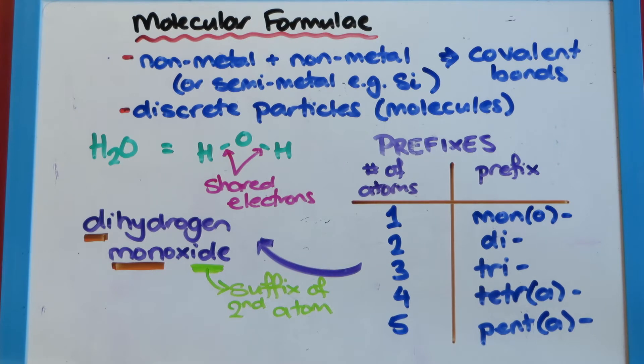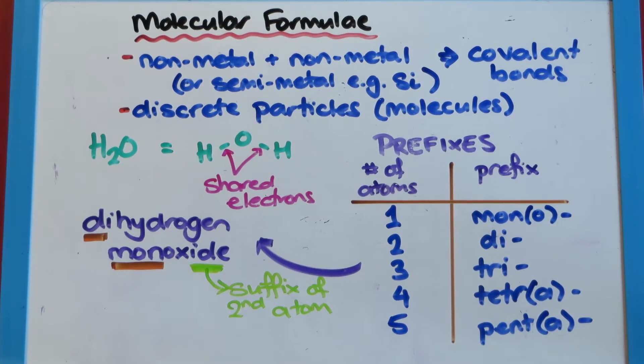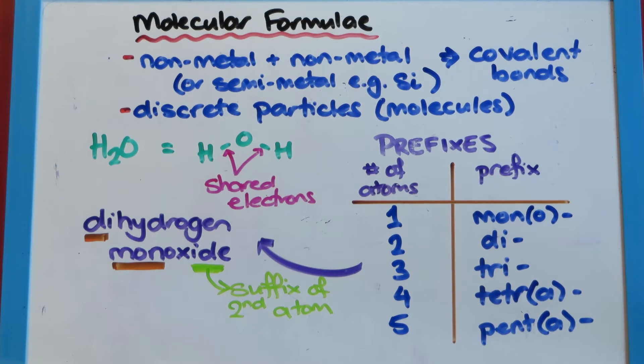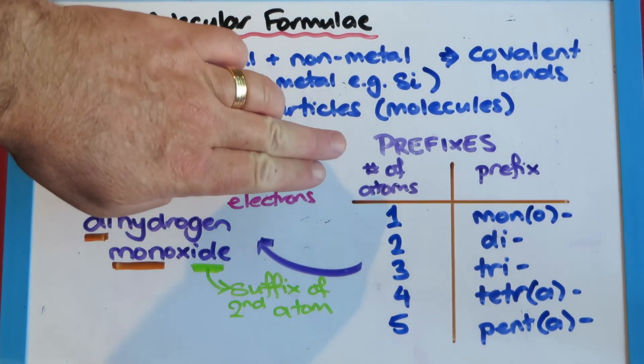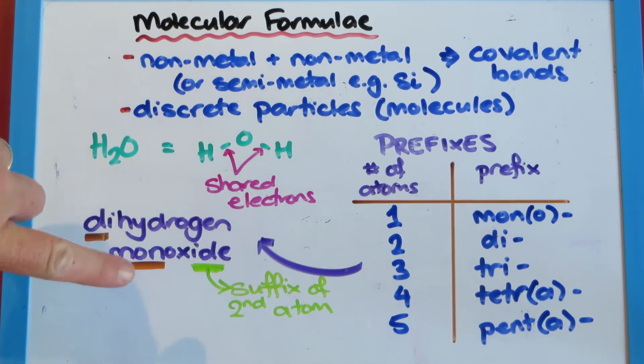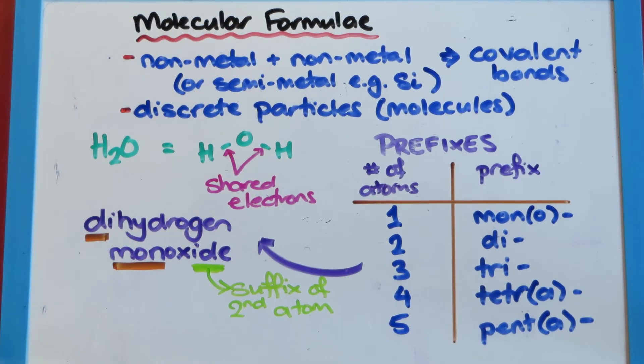The naming of these is quite tricky because a lot of them have got some common names, like H2O is water, but luckily as chemists, we can also give it its proper chemistry name. And for that, we need to learn some prefixes, or things to go at the front of the words, and a suffix, a thing to go at the end.